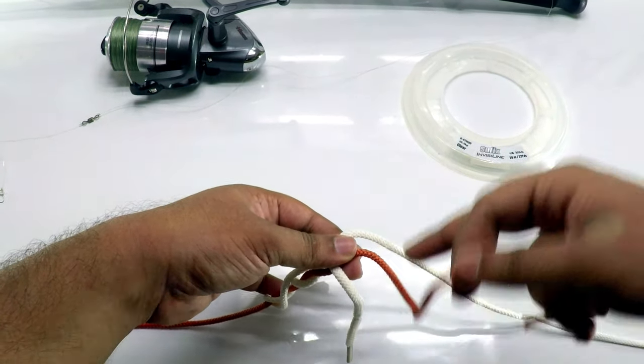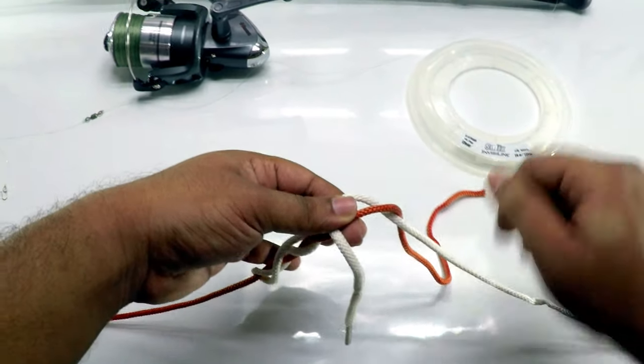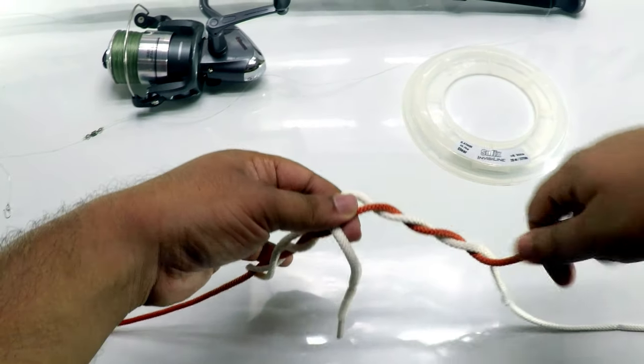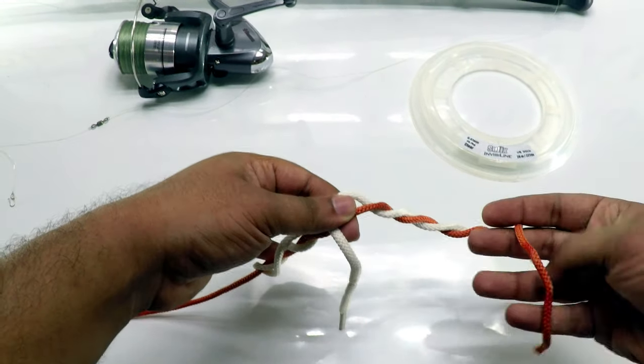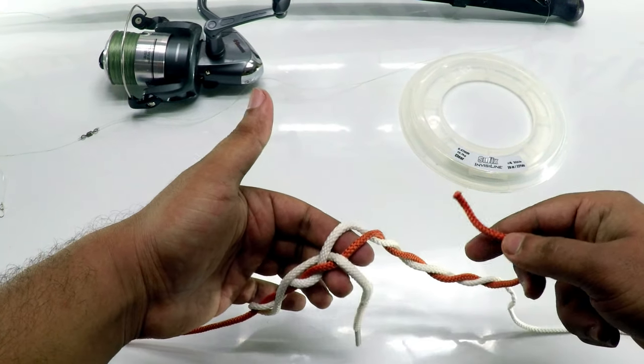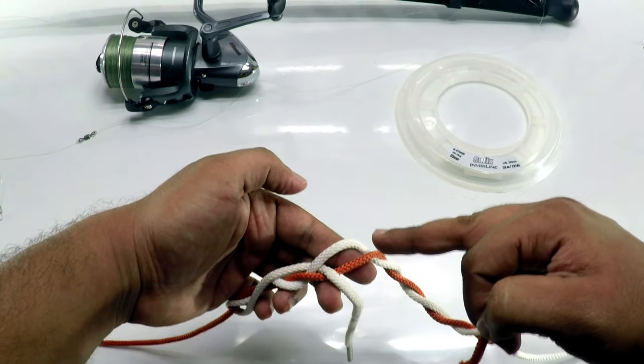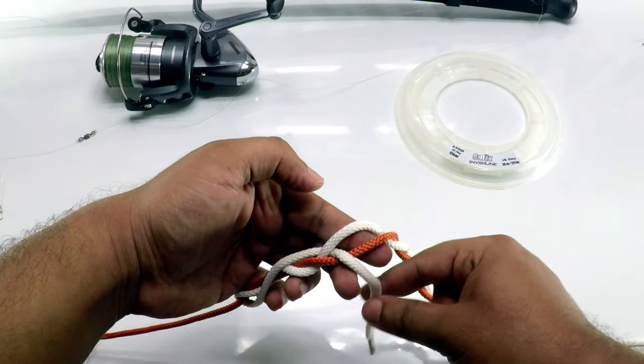Twist this red colored rope onto the other side—not the same side, the other side of the line—four times: one, two, three, and four.